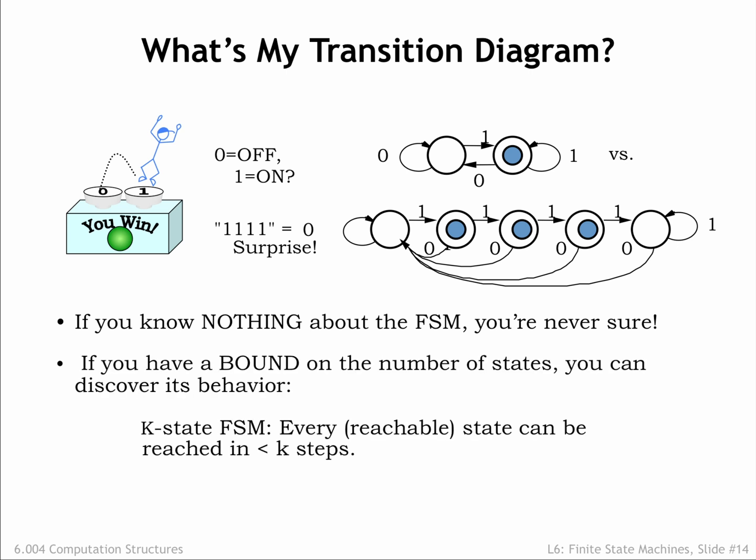But if we do have an upper bound, say K, on the number of states and we reset the FSM to its initial state, we can discover its behavior. This is because in a K-state FSM, every reachable state can be reached in less than K transitions starting from the initial state. So if we try all the possible K-step input sequences one after another starting each trial at the initial state, we'll be guaranteed to have visited every state in the machine.